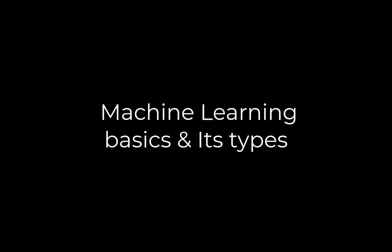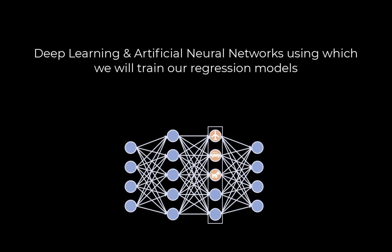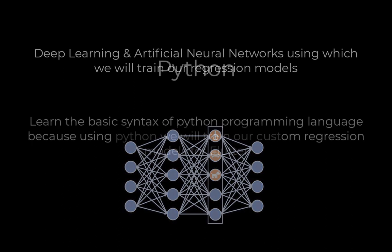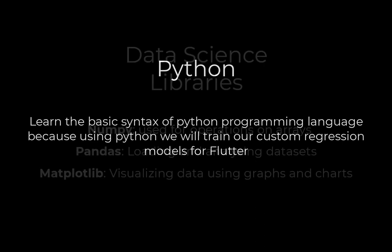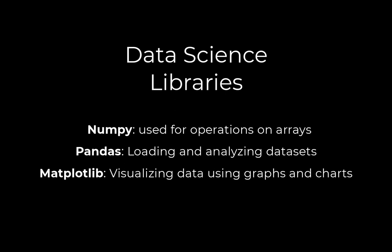We will start this course by looking at the basics of machine learning and its types. After that, we will learn about deep learning and artificial neural networks, using which we are going to train our regression models for Flutter. After learning the basics of these concepts, we will learn the basic syntax of Python programming language, and we are going to use Python to train our machine learning models. After that, we will learn about different data science libraries like NumPy, Pandas, and Matplotlib, which will help us prepare and analyze the dataset for model training.